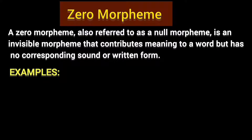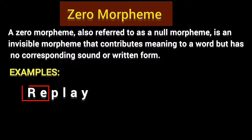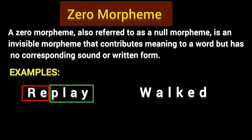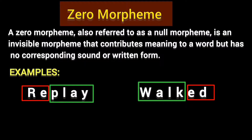Just look at these examples. Observe the word 'replay.' This word has two morphemes: one is the bound morpheme 're-', and the second morpheme is 'play.' You can see these two morphemes have their own forms. Or look at the word 'walked.' This word also has two morphemes: 'walk' is a free morpheme, and '-ed' is a bound morpheme. You can see these two identifiable morphemes — they can be seen or heard. These are normal morphemes.